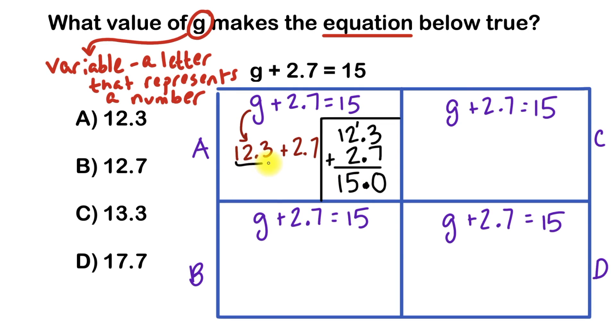And since this does equal 15, that makes this a true statement. And that means the value of G is 12.3. So therefore, our answer is A, and we're done.